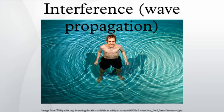In physics, interference is a phenomenon in which two waves superpose to form a resultant wave of greater or lower amplitude. Interference usually refers to the interaction of waves that are correlated or coherent with each other, either because they come from the same source or because they have the same or nearly the same frequency.